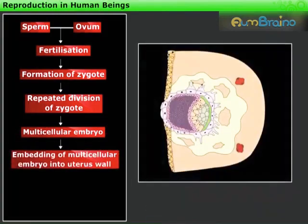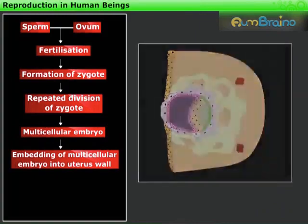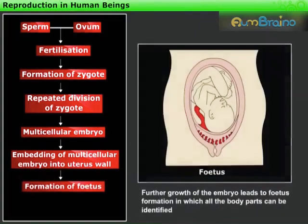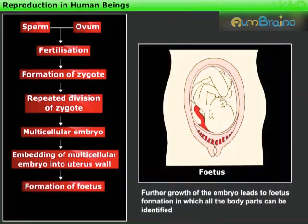The embryo gets embedded in the wall of the uterus for further development. Further growth of the embryo leads to fetus formation, in which all the body parts can be identified.